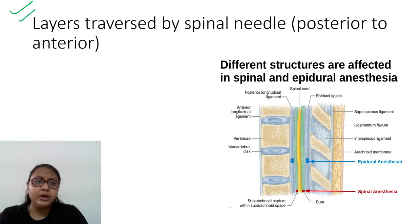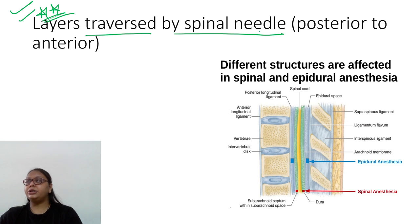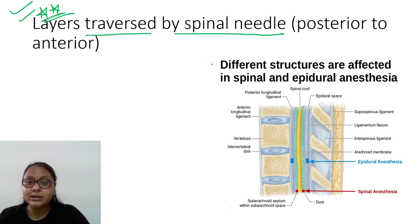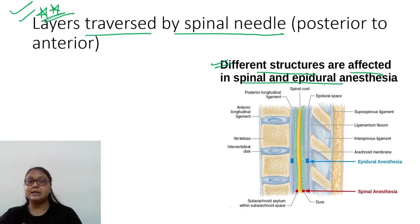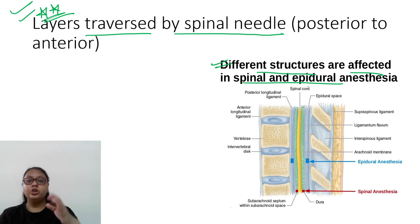Another important exam question: what are the layers pierced during spinal anesthesia? From outside to inside, the needle passes through: skin, subcutaneous tissue, and then we reach the vertebrae. On top of the spinous processes there is the supraspinous ligament, then the interspinous ligament, and then — very important — the ligamentum flavum.